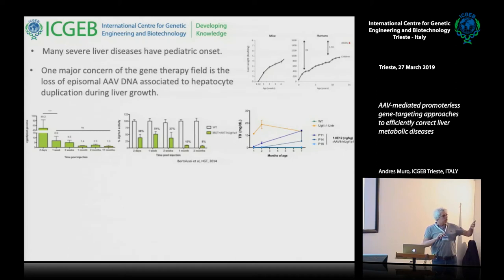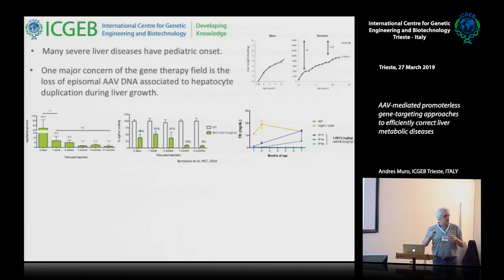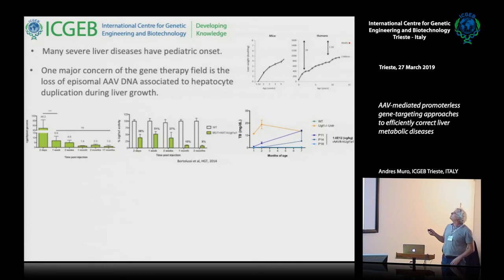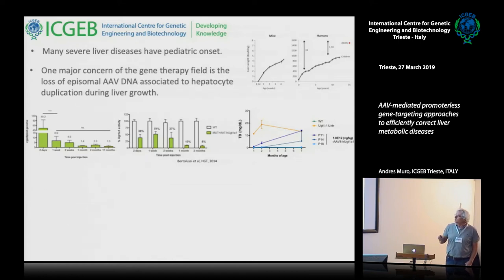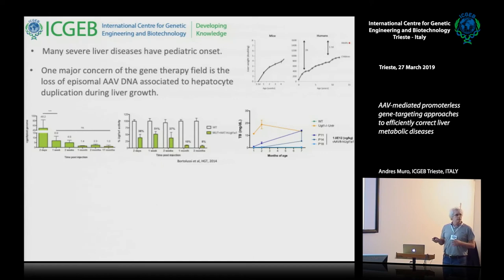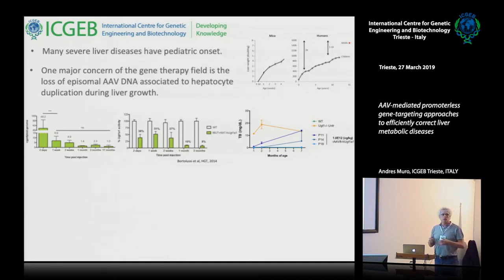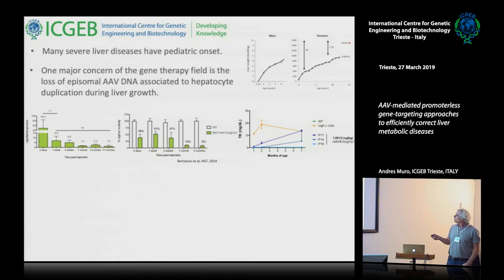When the liver grows, as seen in mice or humans, there is a progressive loss of viral DNA and consequently a loss of therapeutic efficacy. This is a very big problem if we have to treat very young children, because the therapy we give them will not remain effective for a long period. By delaying dosing to when the liver has already grown, there are fewer cell divisions after vector administration and therefore less loss of therapeutic efficacy.